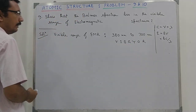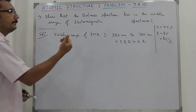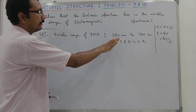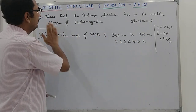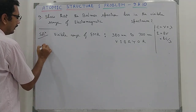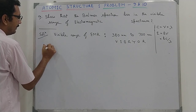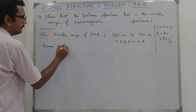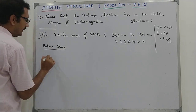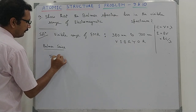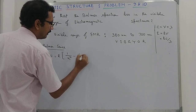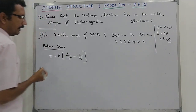We have to prove that the lines obtained in the Balmer series fall within this visible region — that is what will solve this problem. The Balmer series is described theoretically by the Rydberg equation, which is: wave number equals R into (1/n₁² minus 1/n₂²).